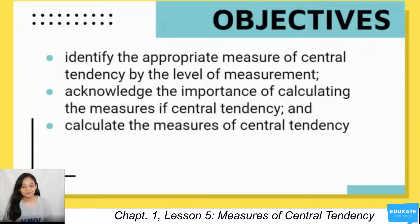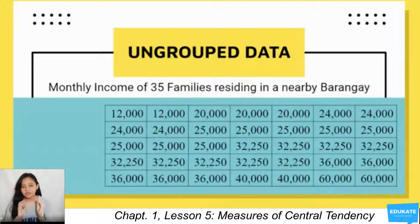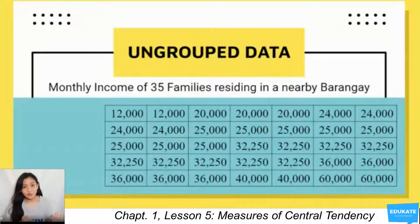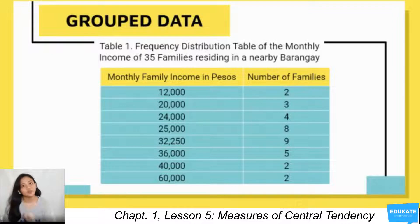We have here an ungrouped data. The following data are the monthly income of 35 families residing in a nearby barangay or village, ranging from 12,000 up to 60,000 pesos, arranged from lowest to highest. The frequency distribution table of the ungrouped data shows the monthly family income in pesos — 12,000, 20,000, 24,000, and so on — with the number of families being 2, 3, 4, 8, 9, 5, 2, and 3.